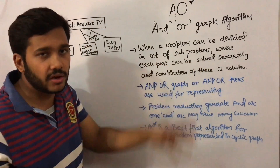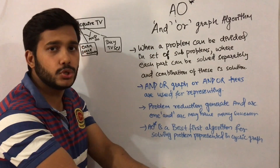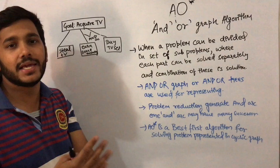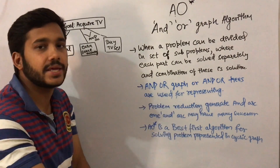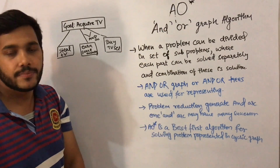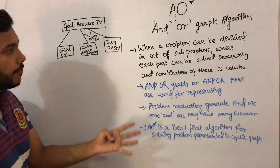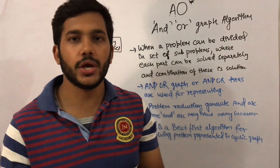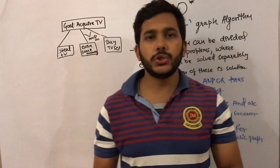The AO* graph algorithm is generally used when problems can be subdivided into smaller parts and the combination of these parts can be used for a solution, or when there is a cyclic problem — meaning a problem which consists of a cycle — that problem can be divided into an AO* graph algorithm problem.